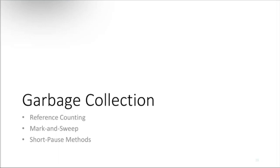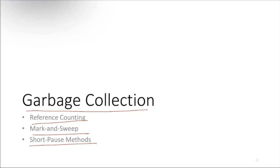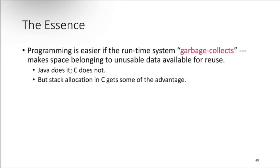Garbage collection is very important for all computer science engineers. There are three main methods: reference counting, mark and sweep, and short pause method. The essence is that programming is easier if the runtime system itself collects the garbage — making space belonging to unavailable or unusable data available for reuse. Java does this, but C does not do garbage collection at runtime.